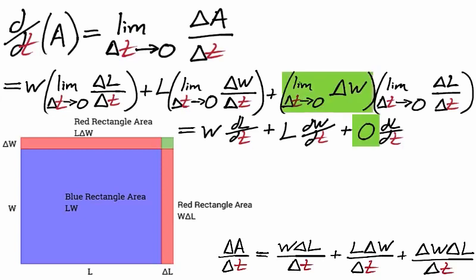When time is zero, there can be no change in width. Therefore, the limit of the change in width as the change in time approaches zero is also zero.